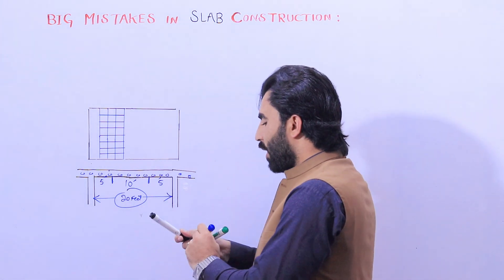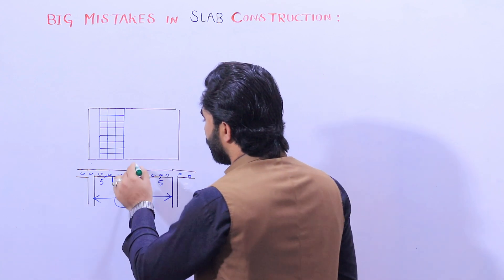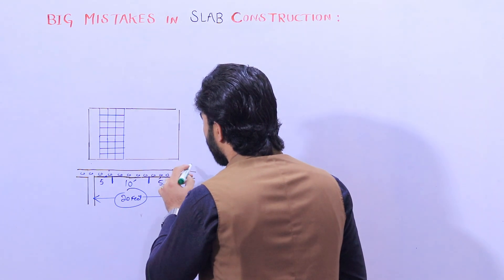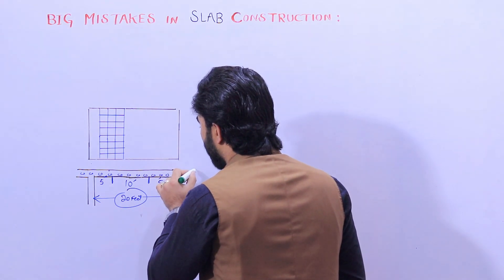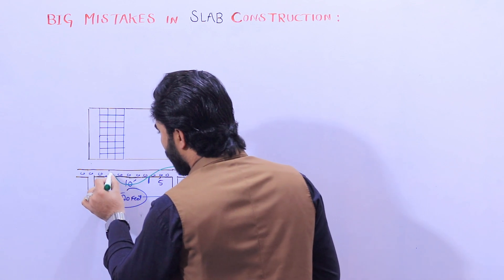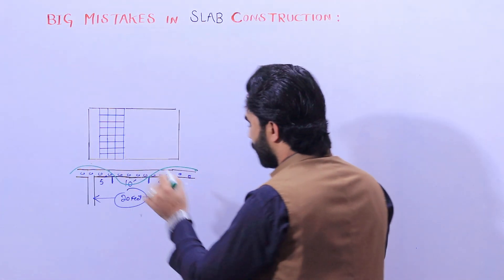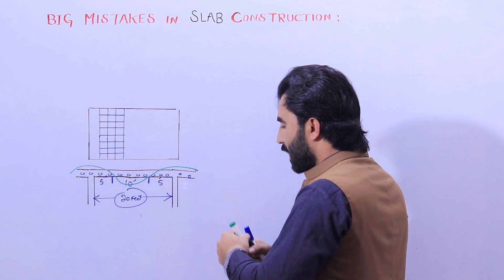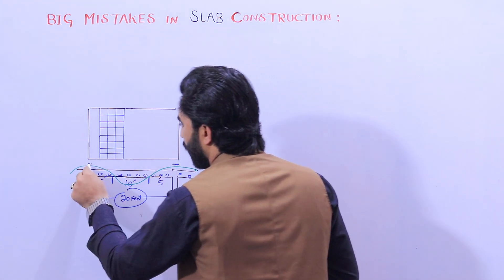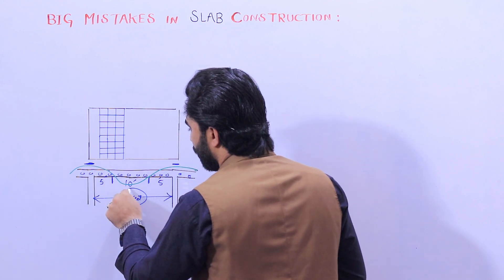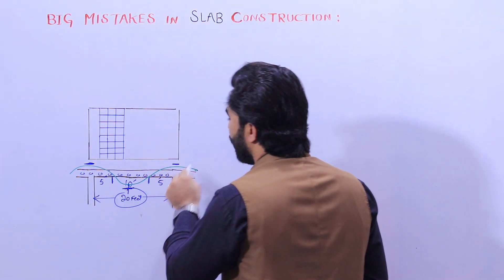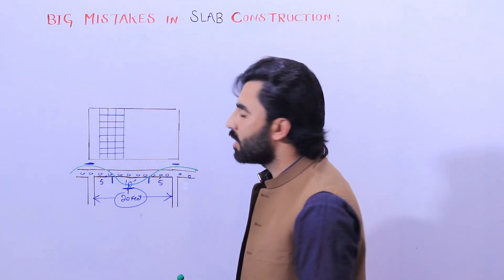This is because here we have negative bending moment. When load is applied on top of the slab, it makes a bending moment diagram — we have negative bending moment at the supports and positive bending moment at the middle. Here at both ends we have negative bending moment, and at the center we have positive bending moment.